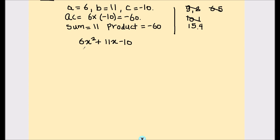So we split the middle term: 6x squared plus 15x minus 4x, because 15 minus 4 equals 11 and 15 times negative 4 gives us negative 60, minus 10.